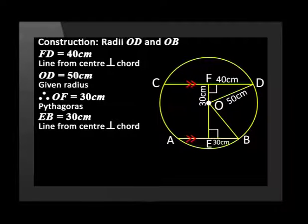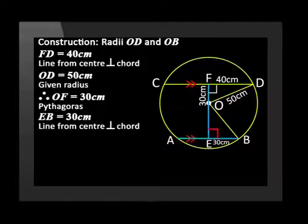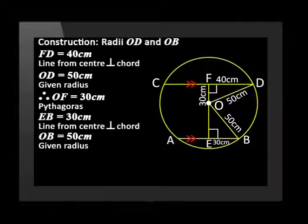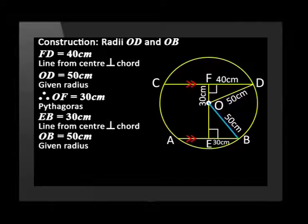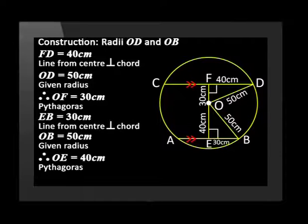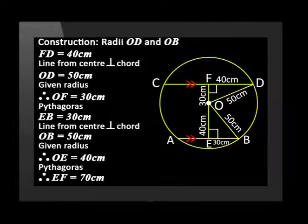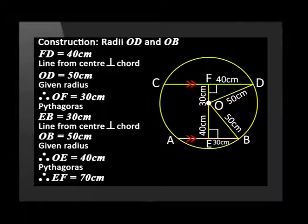Let's repeat this argument for the second triangle. Since AB is 60 cm, we can say EB equals 30 cm, because the line from the center is perpendicular to the chord. The radius was given as 50 cm. Once again using Pythagoras, OE equals 40 cm. The distance EF equals OF added to OE. Therefore the distance EF is 70 cm.